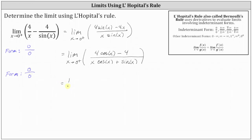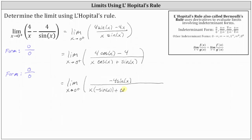So this limit equals the limit as x approaches 0 from the right of the derivative of 4 cosine x minus 4, divided by the derivative of x cosine x plus sine x. The derivative of 4 cosine x is negative 4 sine x, and the derivative of 4 is 0. In the denominator, differentiating x cosine x by the product rule gives x times negative sine x plus cosine x times 1, and then plus the derivative of sine x, which is cosine x. So the denominator becomes negative x sine x plus cosine x plus cosine x.